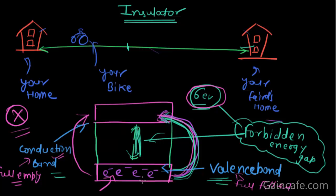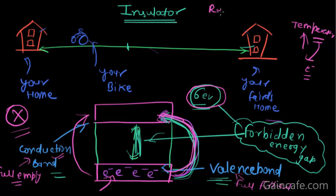Normally an electron cannot acquire such a high amount of energy like six electron volts, so it cannot jump from the valence band to the conduction band, and conductivity is poor. But if the temperature increases, some electrons may gain enough energy to travel from the valence band to the conduction band. Therefore, the resistance of the insulator decreases with increase in temperature.